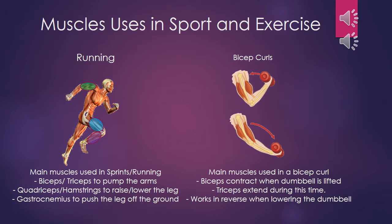The main muscles used in a bicep curl are the biceps, contracting when the dumbbell is lifted, and the triceps, which extend during this movement. It works in reverse when lowering the dumbbell.